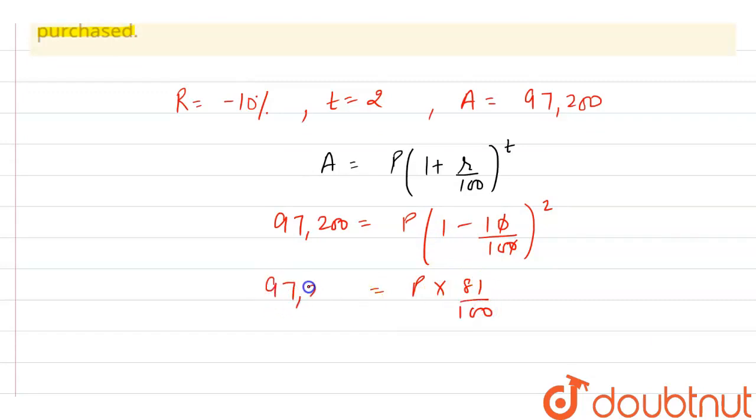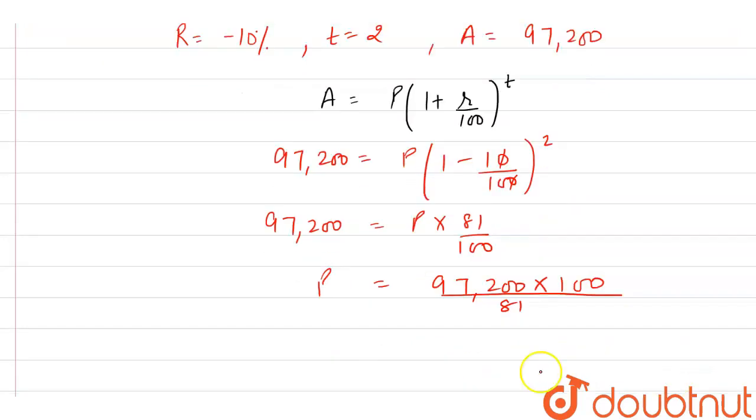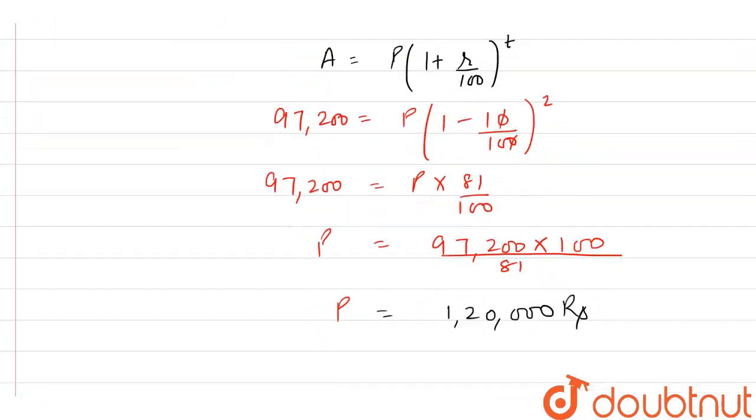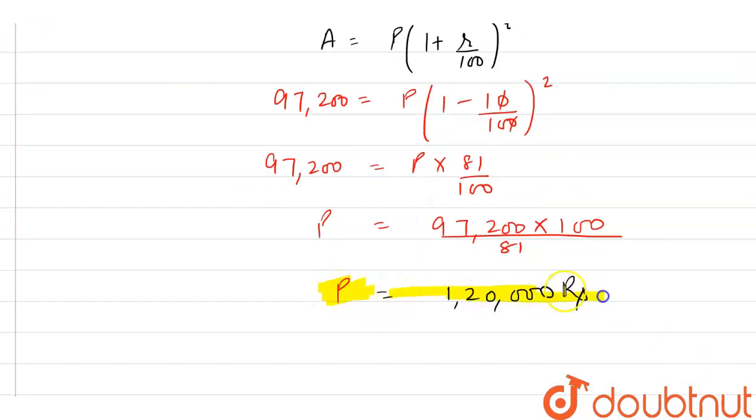Solving for P, we get P = (97,200 × 100) / 81 = 120,000 rupees. As the question asks to find the value when it was purchased, the answer is 120,000 rupees. This is our final answer.